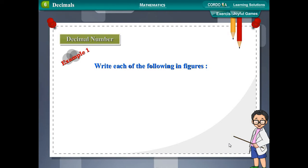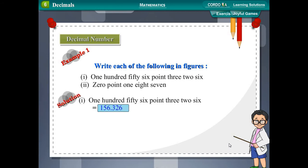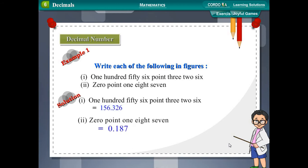Example 1: Write each of the following in figures. The number one hundred fifty-six point three two six is written as 156.326. The number zero point one eight seven is written as 0.187.